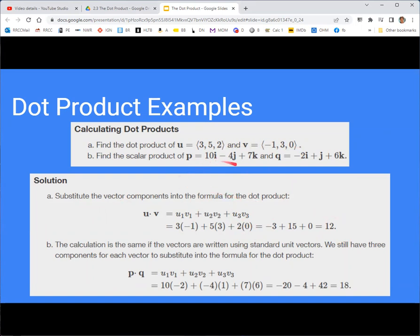If you're given the vectors in terms of the basis vectors i, j, k, same idea, just pull off the components and multiply them together and then add those results up.